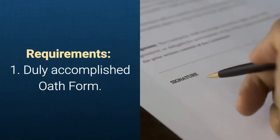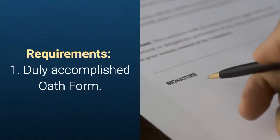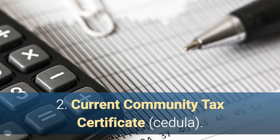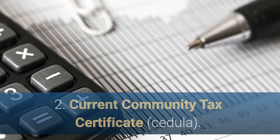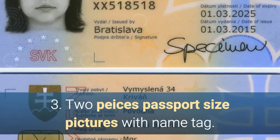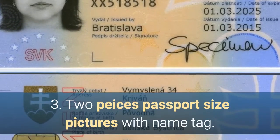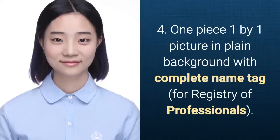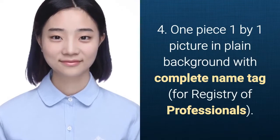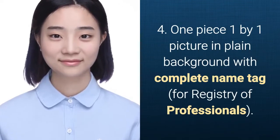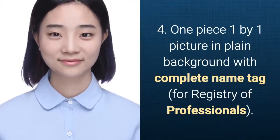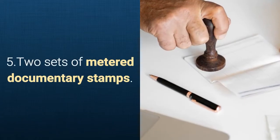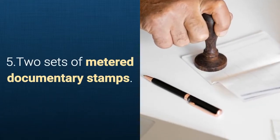Requirements: 1. Duly accomplished form. 2. Current Community Tax Certificate. 3. Two pieces passport size pictures with name tag. 4. One piece one by one picture in plain background with complete name tag, for registry of professionals. 5. Two sets of metered documentary stamps.